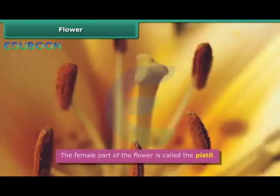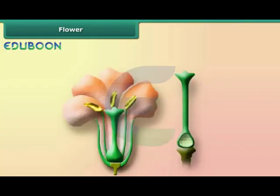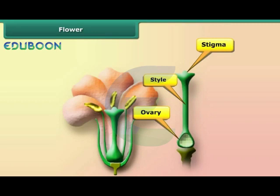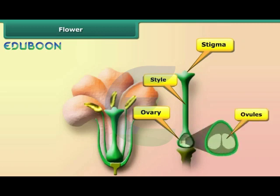The female part of the flower is called the pistil. It is the innermost part of the flower. The pistil has three parts: stigma, style, and ovary. The stigma is the sticky surface at the top of the pistil — it traps and holds the pollen. The style is a tube-like structure that holds up the stigma. The style leads down to the ovary that contains the ovules.